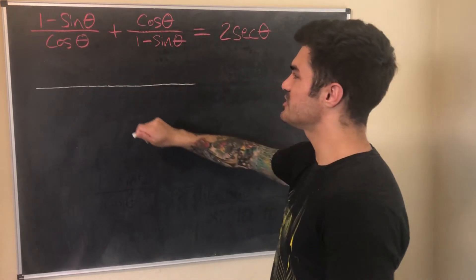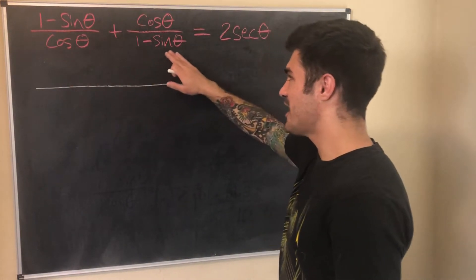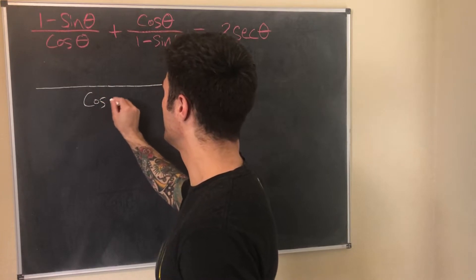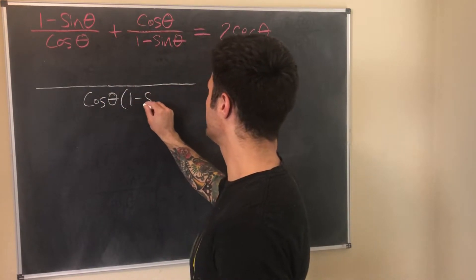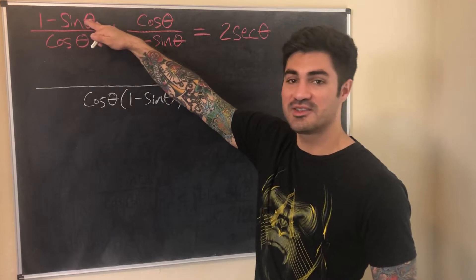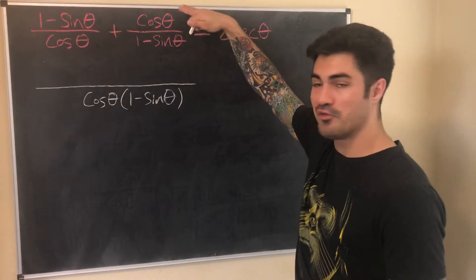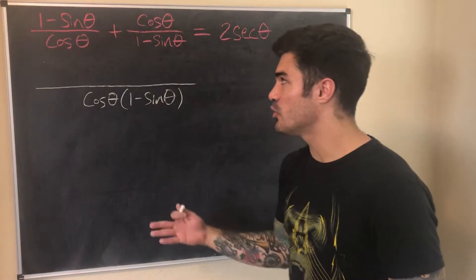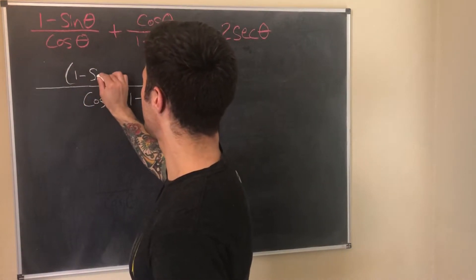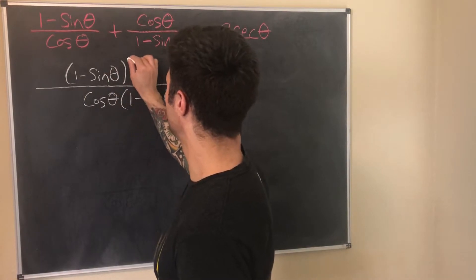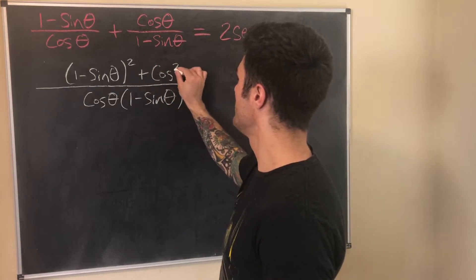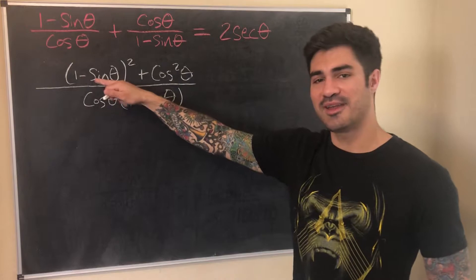The two denominators share nothing in common, so our common denominator is their product: cosθ · (1 − sinθ). We multiply the first term by (1 − sinθ)/(1 − sinθ) and the second by cosθ/cosθ. In the numerator of the first term, (1 − sinθ) multiplied by itself gives (1 − sinθ)², and from the second term we get cos²θ, all over cosθ · (1 − sinθ).